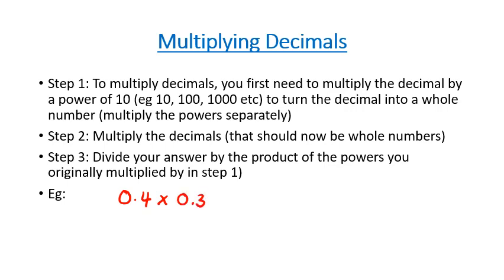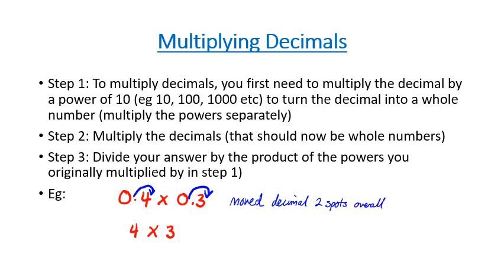The first thing we want to do is move the decimal place one spot on each number to make them whole numbers. So that gives us 4 times 3. As a side note, we moved the decimal two spots overall — one spot on the first number and one spot on the second. So when we multiply our whole numbers, we get 4 times 3, which gives us 12.